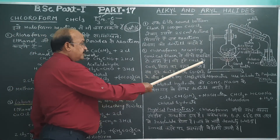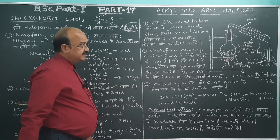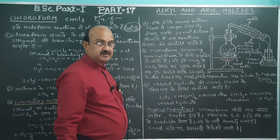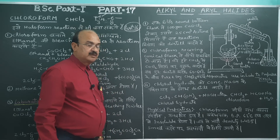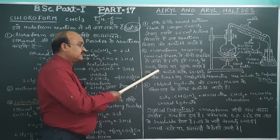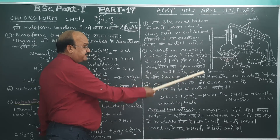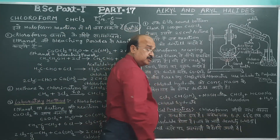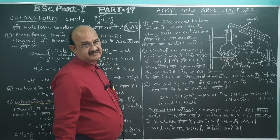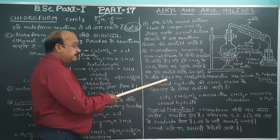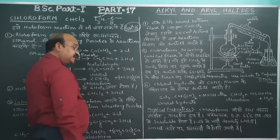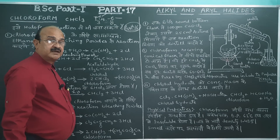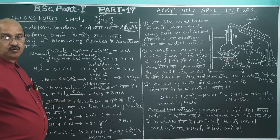The chloroform that is formed — we dry it by adding calcium chloride. We separate it using a separating funnel, and then we add calcium chloride to the obtained chloroform and distill it again. At 60–62°C — since the boiling point of chloroform is 61°C — we obtain pure and dry chloroform.